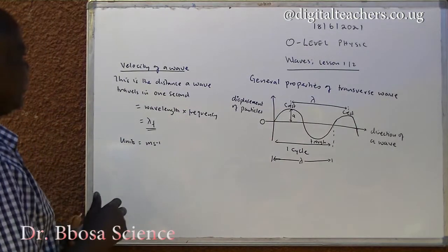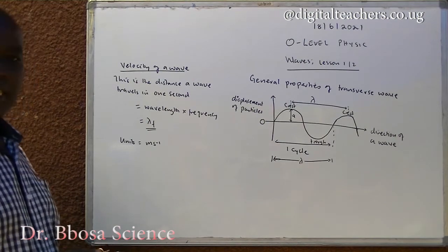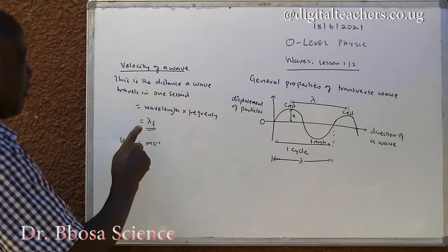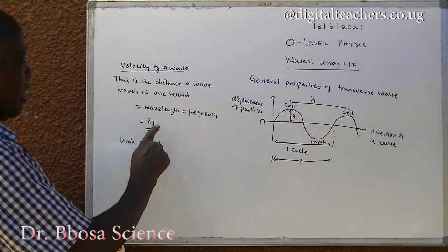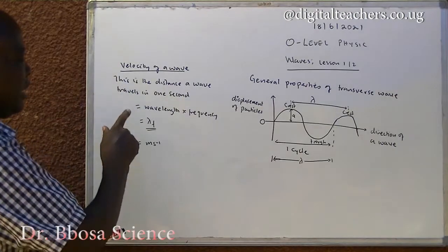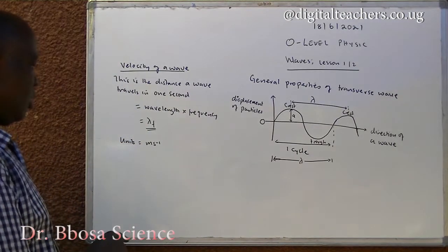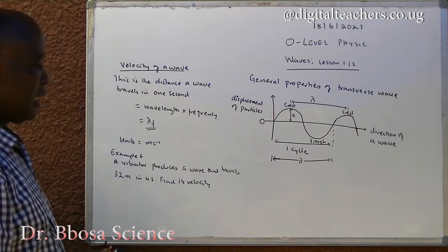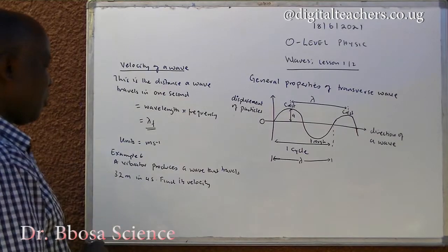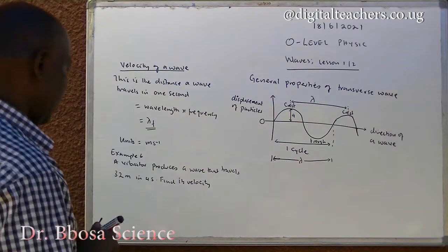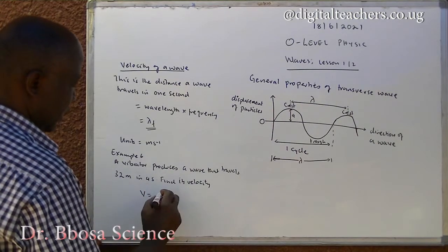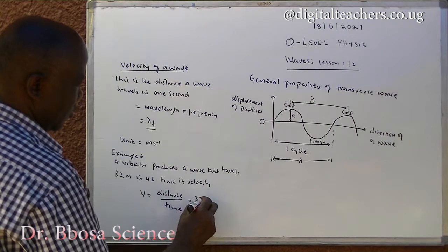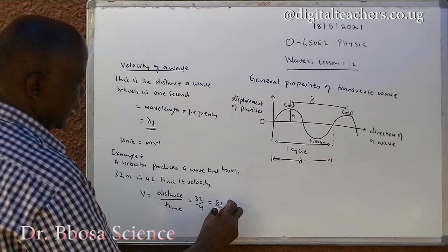Velocity of a wave is the distance a wave travels in one second. It is equal to wavelength times frequency. The symbol for wavelength is lambda, while the symbol for frequency is f. So velocity is equal to lambda times f. Units is meters per second. Example 6: A vibrator produces a wave that travels 32 meters in 4 seconds. Find its velocity. Velocity is equal to distance over time, equal to 32 over 4, which is equal to 8 meters per second.